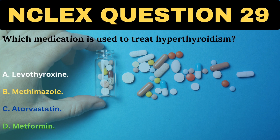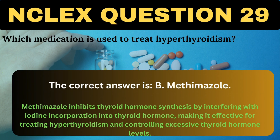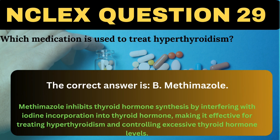Which medication is used to treat hyperthyroidism? A. Levothyroxine. B. Methimazole. C. Atorvastatin. D. Metformin. The correct answer is B, Methimazole. Methimazole inhibits thyroid hormone synthesis by interfering with iodine incorporation into thyroid hormone, making it effective for treating hyperthyroidism and controlling excessive thyroid hormone levels.